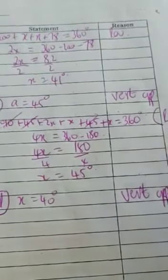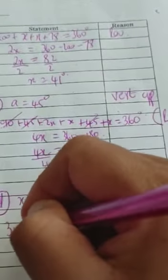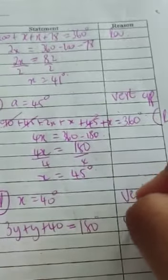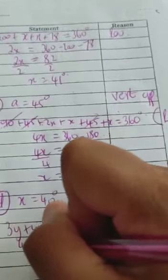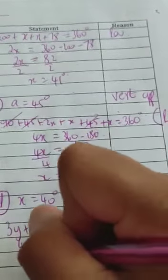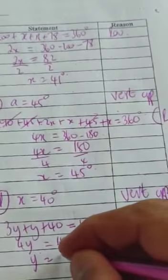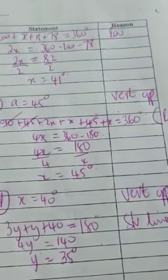Then we see the 3y plus y plus 40 equals 180, because it's a straight line. So you've got 4y is equal to 180 minus 40 is 140. Divided both sides by 4. So it's going to give you 35 degrees now.